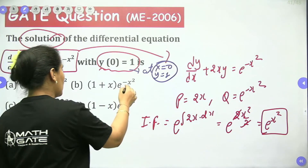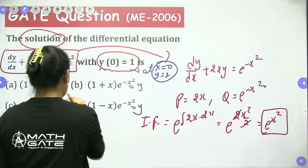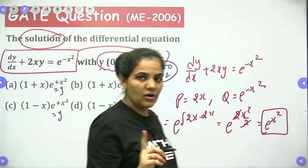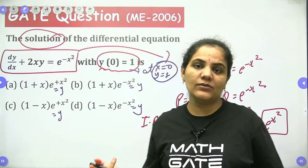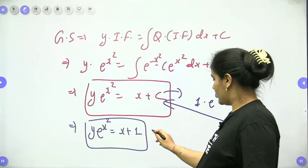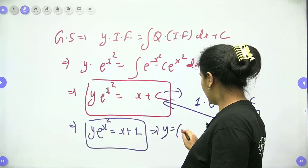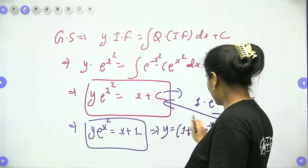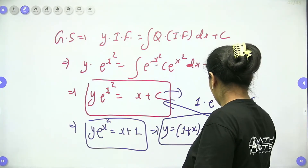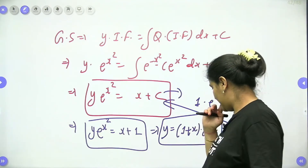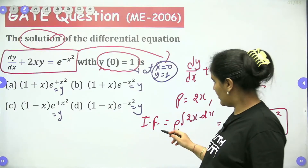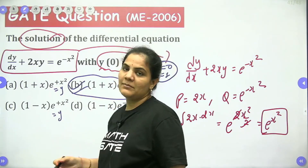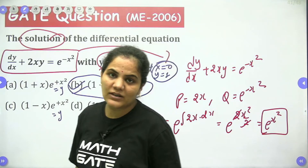We don't have options in that form. The question asks for y equals something. So we can write y equals (1 plus x) times e to the power minus x squared. This is the final answer, which you can see in option B for Bombay.